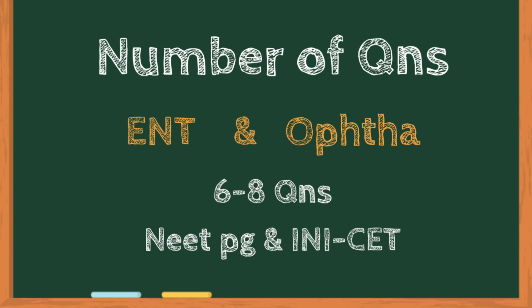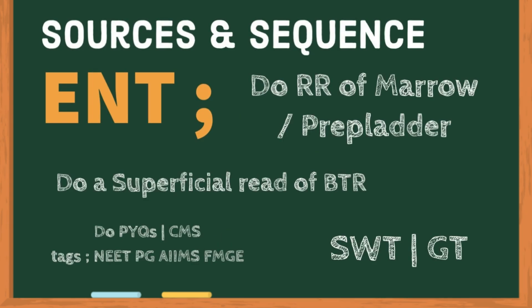Coming to the sources and sequences — first the ENT section. For ENT, the best approach is to do the rapid revision of either Marrow or Prepladder; both are equally good. I did the rapid revision of Prepladder by Dr. Vaishnavi Ma'am. After that, I did a superficial read of BTR and the bonus BBTR of the ENT section by Zainab Ma'am, because some concise points are not present in the rapid revision. So add those points to your rapid revision notes — extract the points not present in rapid revision and add them into your rapid revision notes.